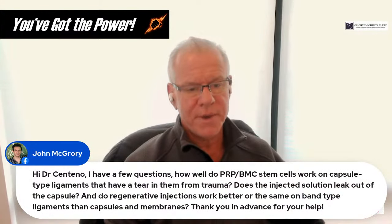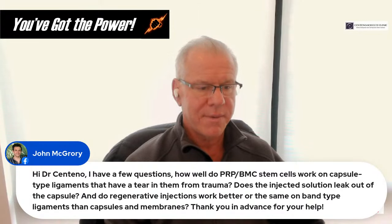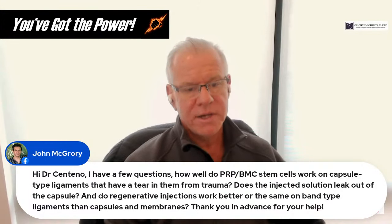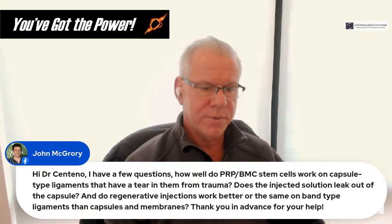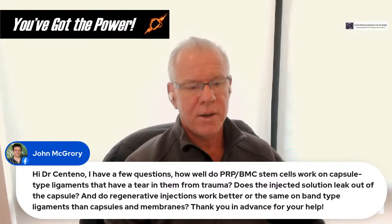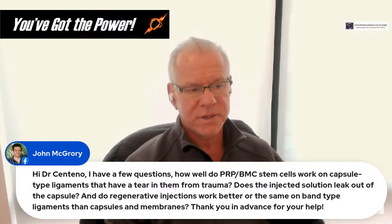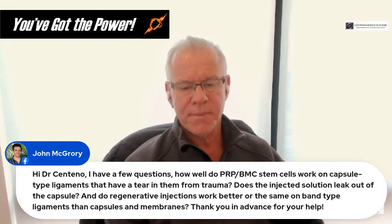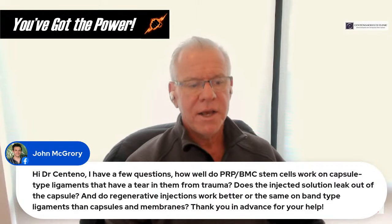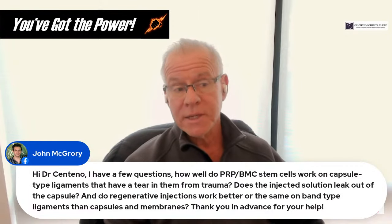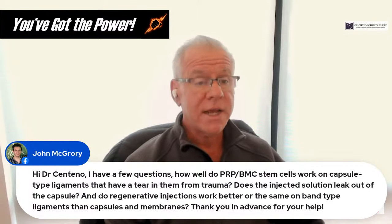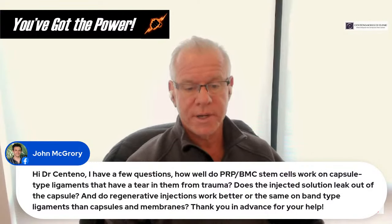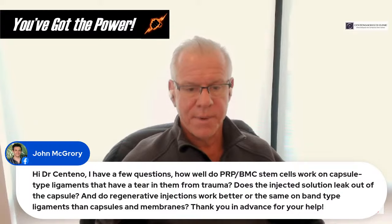How well do PRP and BMC work on capsular-type ligaments with tears from trauma? Does the injection solution leak out? Do regenerative injections work the same on band-type ligaments as on capsules? I need a better understanding of what kind of capsular-type injury we're talking about and how it was determined — then I can answer that more specifically.